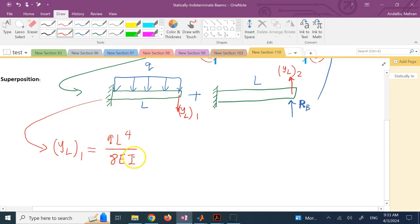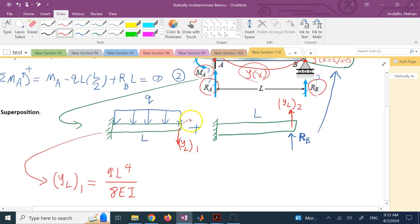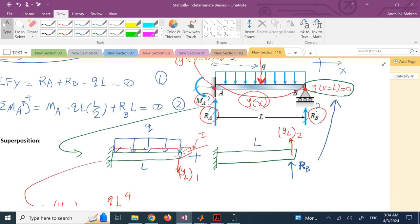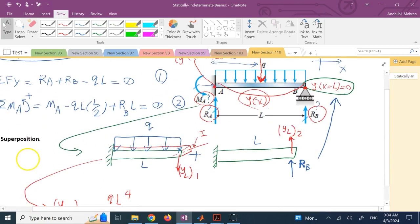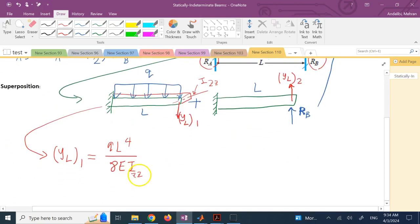If this is the cross-section of the beam, it's about this neutral axis. The I about that is the I you use here. You might call it, for instance, with this definition, Izz. And then for this load at the end, YL number 2 equals RB times L cubed over 3 times E times Izz.